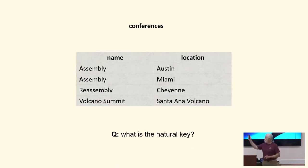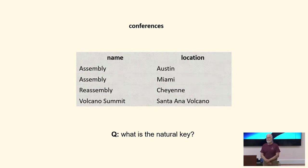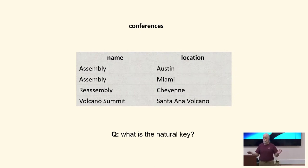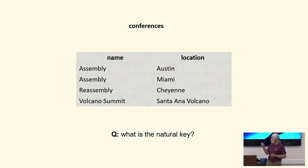Here's a table of conferences with columns name and location. Anybody want to tell me what the natural key on this table should be? Name and location — because that's the only combination that distinguishes between events and future events. If we just took the data already there, we could say location is the natural key since it's smaller, but we need to take into account the rule that's going to enforce how we want this table to look and function.